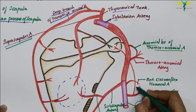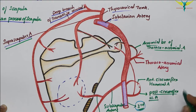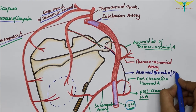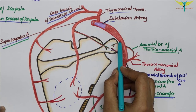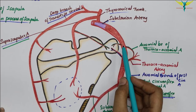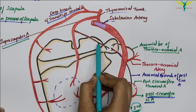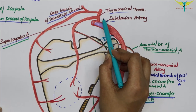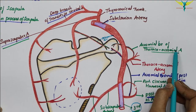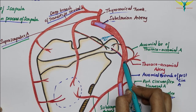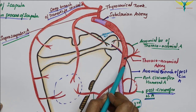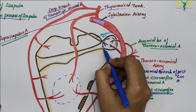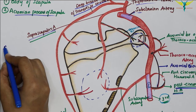The acromion anastomosis also involves the acromial branch of the posterior circumflex humeral artery, which is a branch from the third part of the axillary artery. To revise: the anastomosis around the acromion process of the scapula is formed by the acromial branch of the suprascapular artery (from the thyrocervical trunk, first part of subclavian artery), the acromial branch of the thoracoacromial artery (from the axillary artery), and the acromial branch of the posterior circumflex humeral artery (from the third part of the axillary artery).